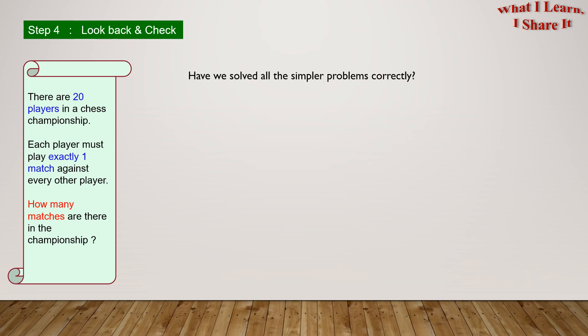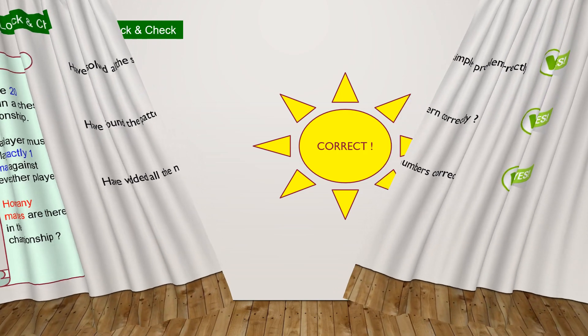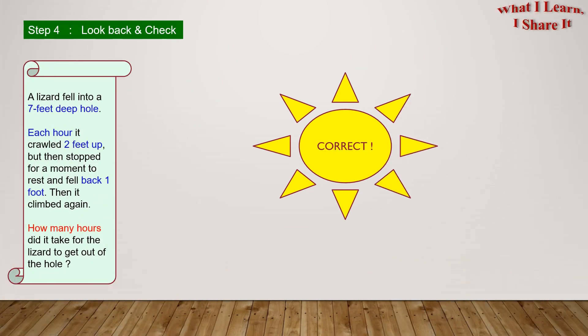Step 4: Look back and check. Have we solved all the simpler problems correctly? Yes, we have. Have we found the pattern correctly? Yes, we have. And have we added all the numbers correctly? Yes, we have. So this means our answer is... Correct! Yay! We solved the problem!